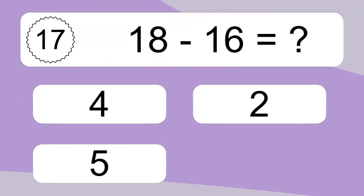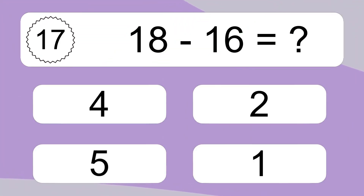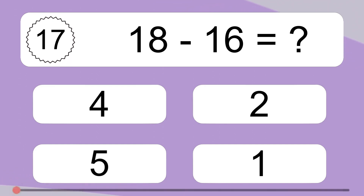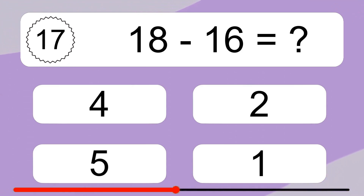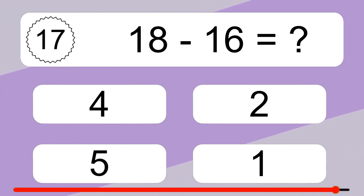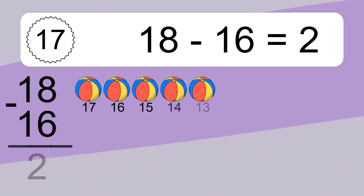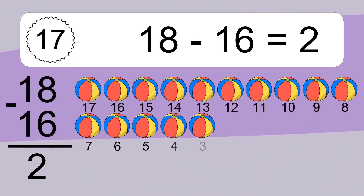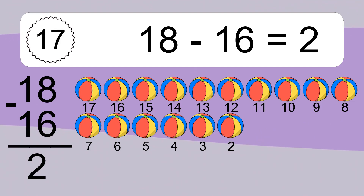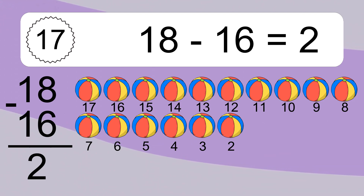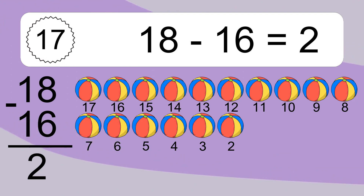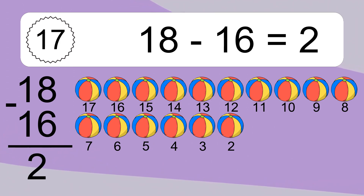18 minus 16 equals what? 18 minus 16 equals 2. Let's count it. 17, 16, 15, 14, 13, 12, 11, 10, 9, 8, 7, 6, 5, 4, 3, 2.